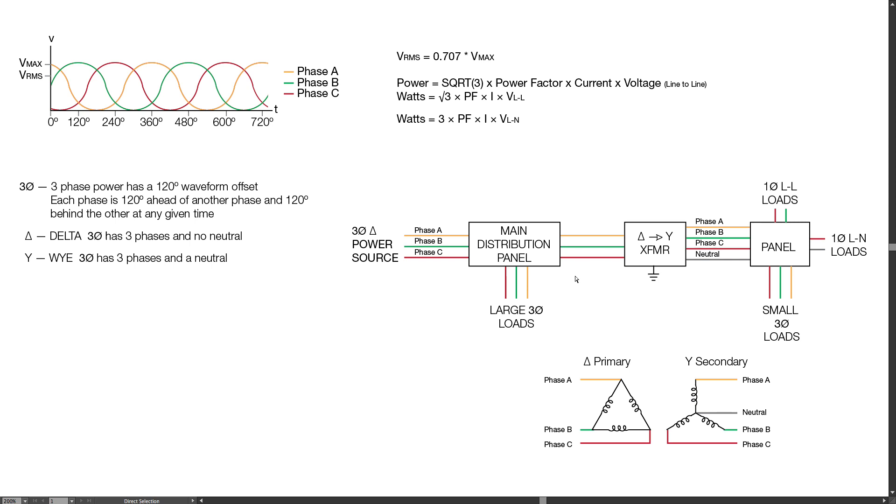From here you might go to a transformer. This would be a delta-to-Y transformer, and what it does is it gives you a neutral. The important part about this neutral is that this transformer should be grounded, so the neutral will be grounded to ground as well. This gives you a neutral ground reference that can be common throughout the building.